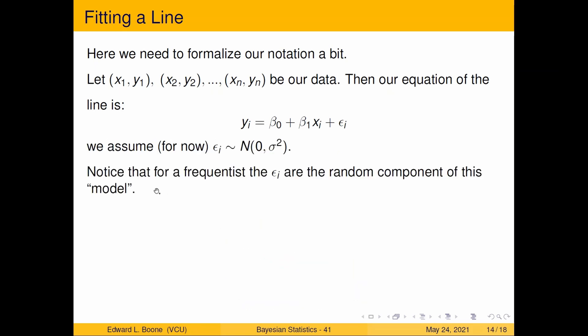So for a frequentist, the epsilon i are the random components of this model. Now, since we're doing a Bayesian framework, there's more things that are random here. We're going to assume that the epsilon i follow a normal distribution with some variance sigma squared and it'll show up in our model.